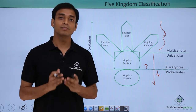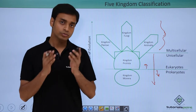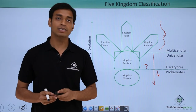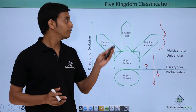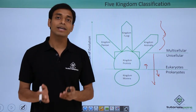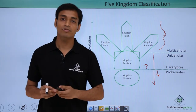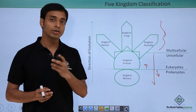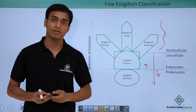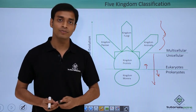In this video we have talked about the five kingdom system of classification put forward by R.H. Whittaker, the criteria he used, the reasons why this system was needed, and we looked at a schematic diagram of the classification. I hope you have understood and enjoyed this video. Thank you.